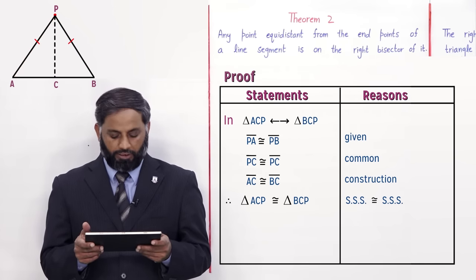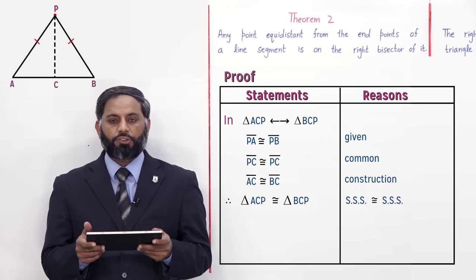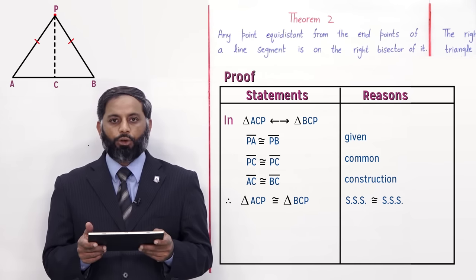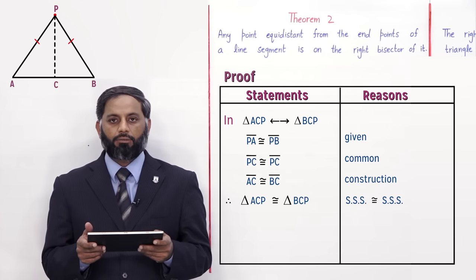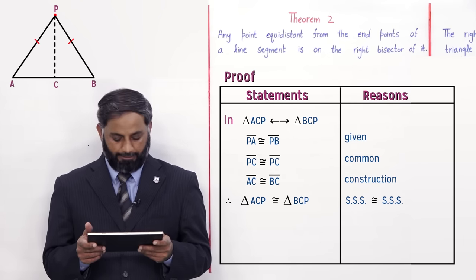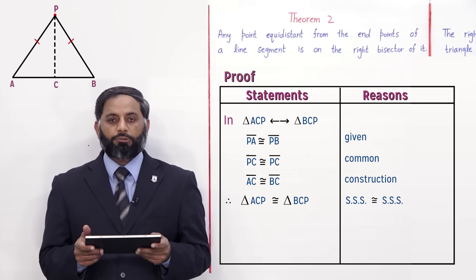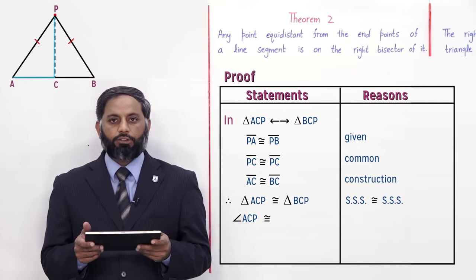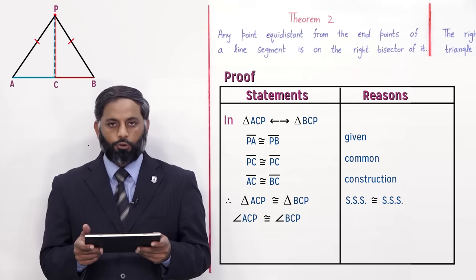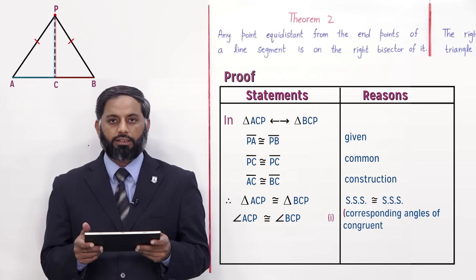But we still need to prove that the angle at midpoint C of line segment AB is 90 degrees. If we show that angle is 90 degrees, then it will be proved that point P is on the right bisector of line segment AB. Since the triangles are congruent, corresponding angles are also congruent. So angle ACP is congruent to angle BCP — this is equation 1, reason: corresponding angles of congruent triangles.